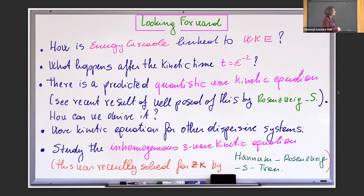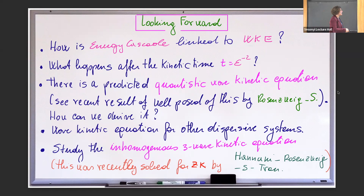The only result we are aware of beyond kinetic time is for the linear equation with potential. There is also a quantum wave kinetic equation — more related to the BBGKY hierarchy — and recently with my postdoc we proved that the formal wave kinetic equation that comes for that is well-posed, but there is no derivation for it. Of course, wave kinetic equations for other dispersal systems are also of interest. I would advise anyone who tries this to pick something with a relatively nice omega, otherwise you end up with a lot of problems. On the other hand, it's interesting to use something not easy, because it might not be true.